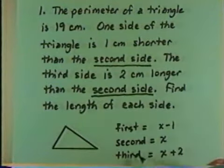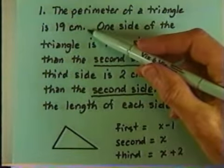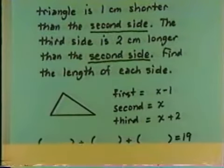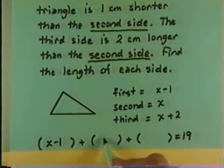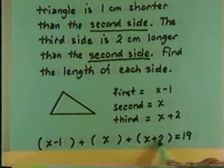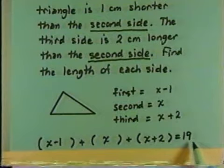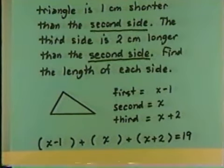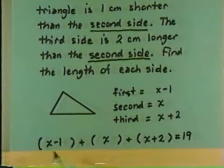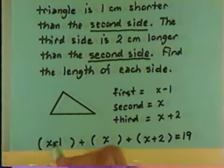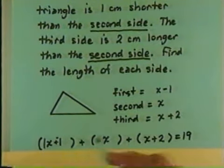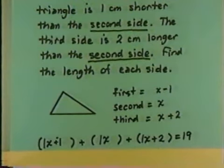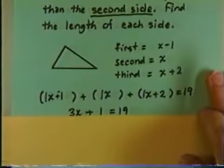The strategy is to add the lengths of the three sides to get the perimeter. We're told the perimeter is nineteen, so we'll add these three expressions and set them equal to nineteen: (x minus 1) plus x plus (x plus 2) equals nineteen. Now we have an equation. Let's simplify the left-hand side by combining like terms — changing subtract one to add negative one. This gives us one x plus one x plus one x, which makes three x. Negative one plus two is one, so we get three x plus one equals nineteen.